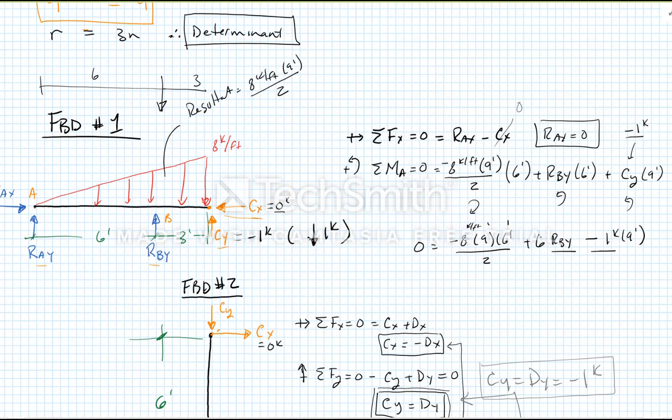I can solve this for RBY. So in this case, RBY is going to equal one sixth. Bring it over to the other side, the other two get positive signs. That's 72 kips times six feet over two plus nine kip feet. And I get RBY is equal to 37 and a half kips.